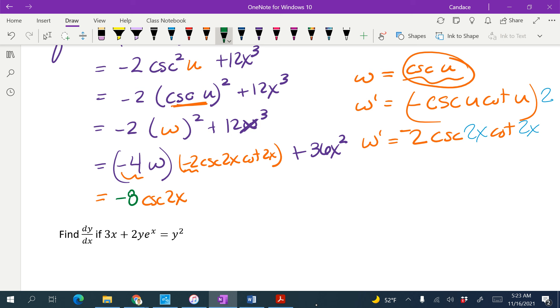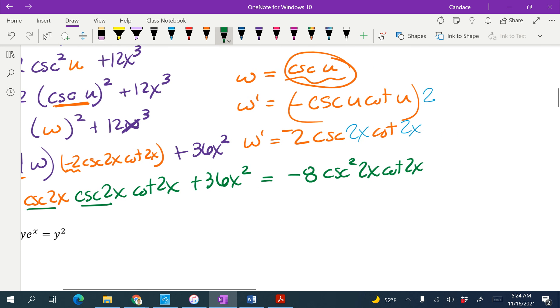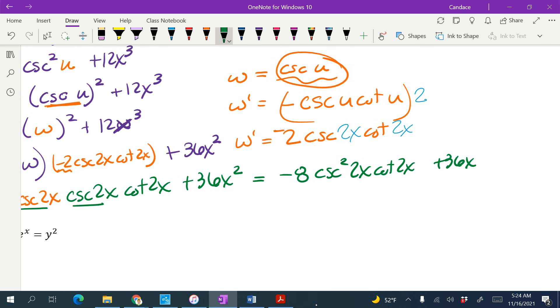And then this other mess, we've already taken care of the 2, so cosecant of 2x, cotangent of 2x, plus 36x squared. They would likely put these two things together, so it would probably look like negative 8 cosecant squared 2x, cotangent 2x, plus 36x squared.